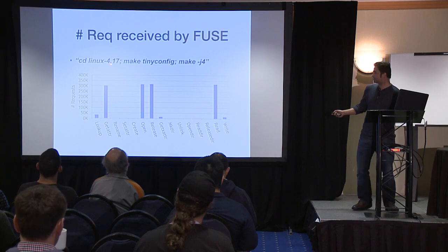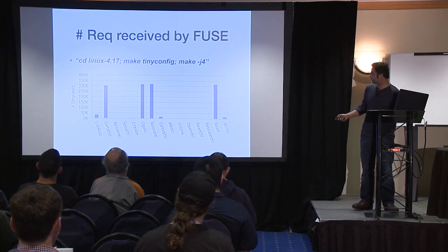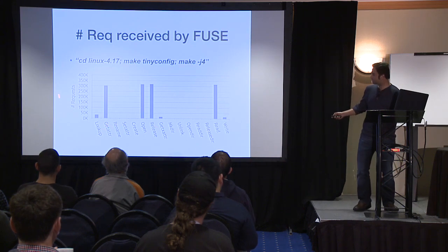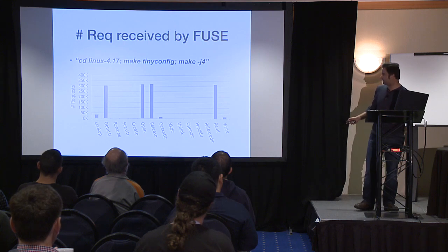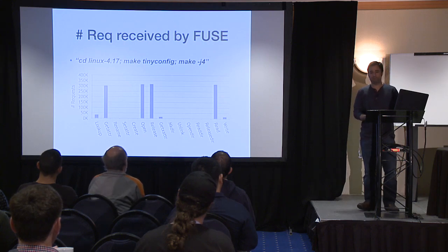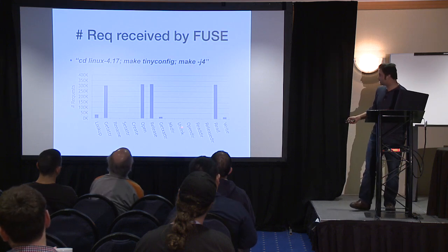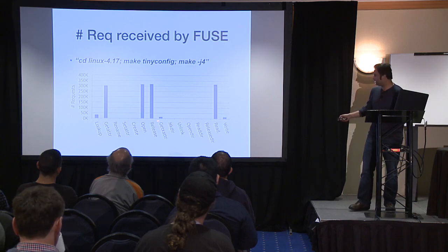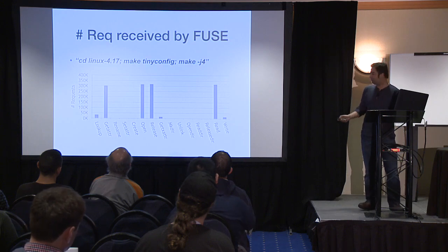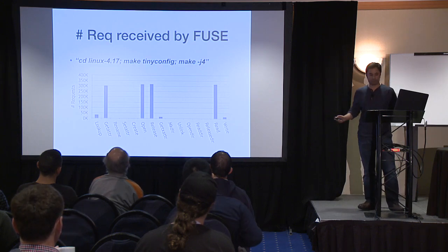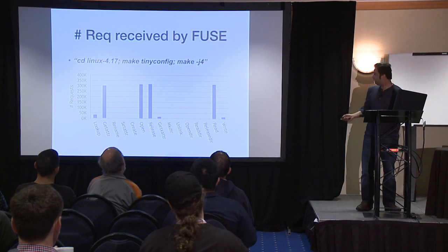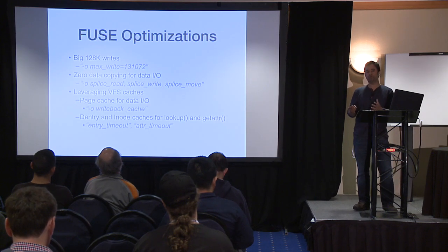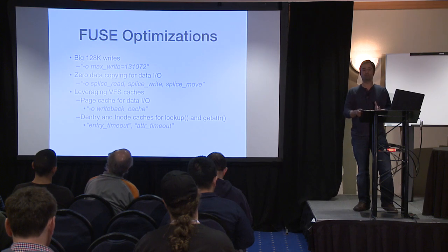Looking at the number of requests delivered to the Fuse daemon during the Linux compilation benchmark: the x-axis shows request type, y-axis shows the count in thousands. This benchmark is very heavy on metadata requests — there are lookup requests, get attribute requests, get extended attribute requests, apart from regular I/O read and write requests. So how can we reduce the number of requests to the Fuse daemon, which will in turn reduce context switches?